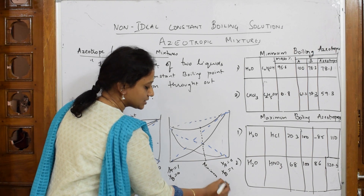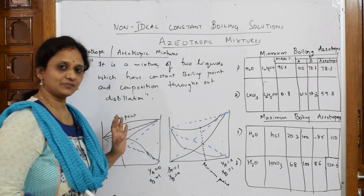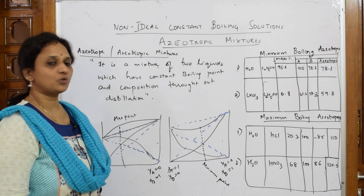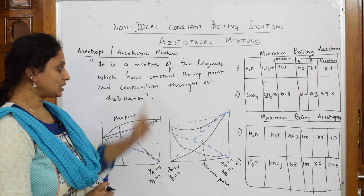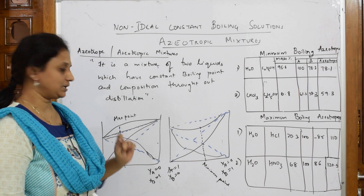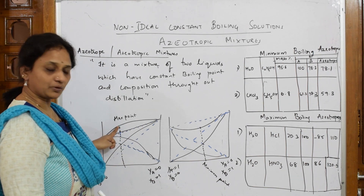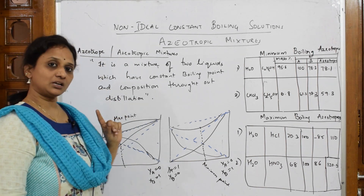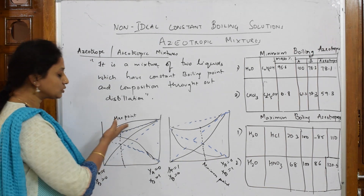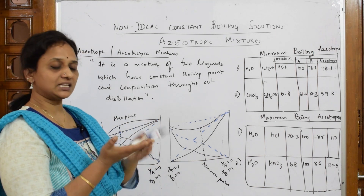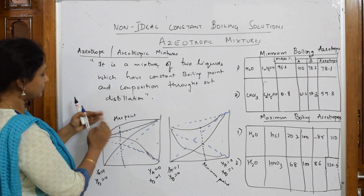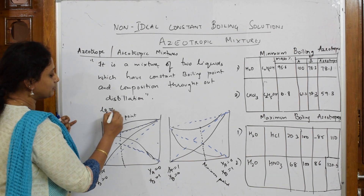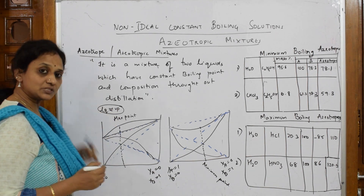Now suppose we take a mixture at this particular maximum or minimum point. We have two components — A and B. At the maximum point or the minimum point, the vapor phase and the liquid phase are both in equilibrium. The liquid phase as well as the vapor phase will have the same composition at that point.